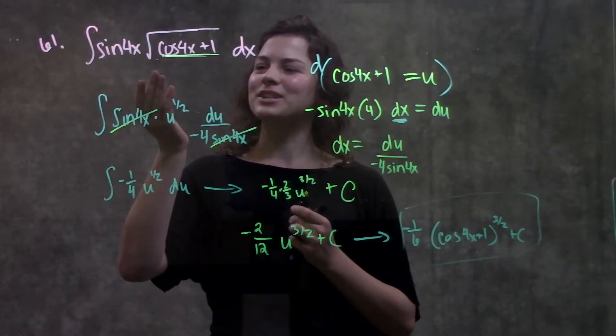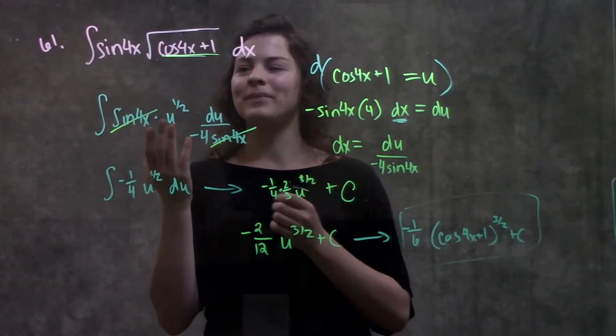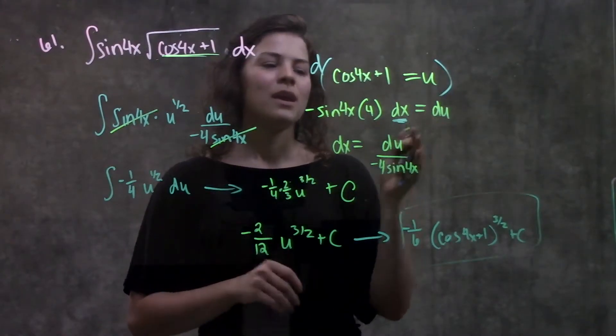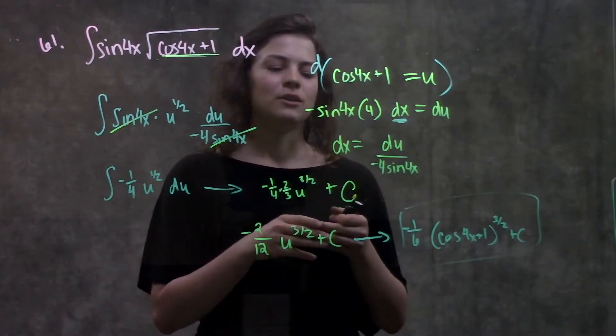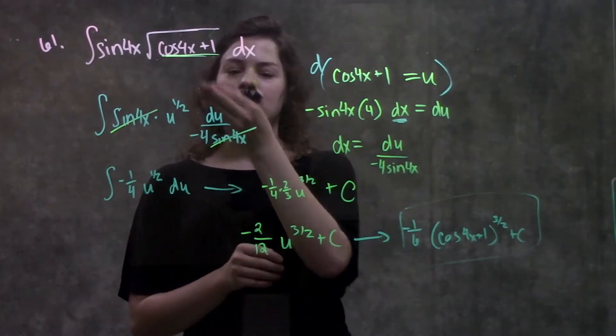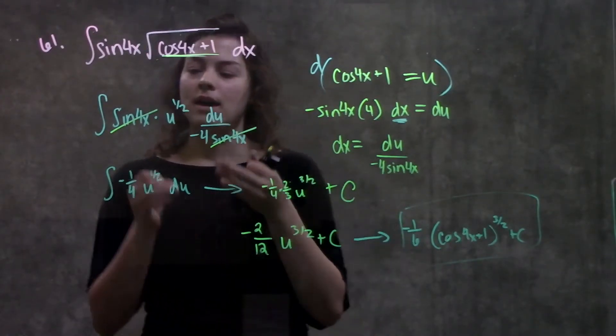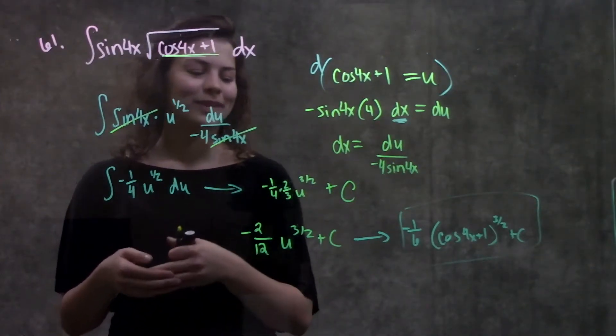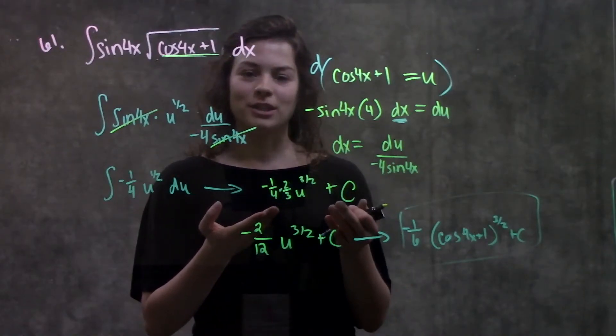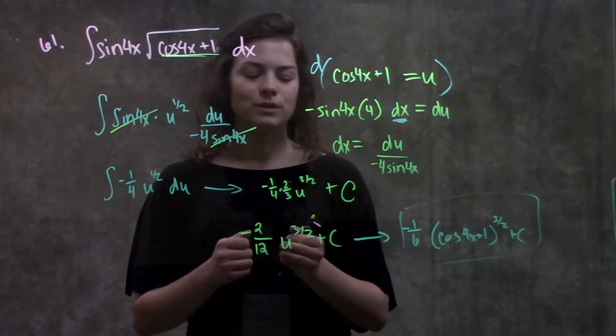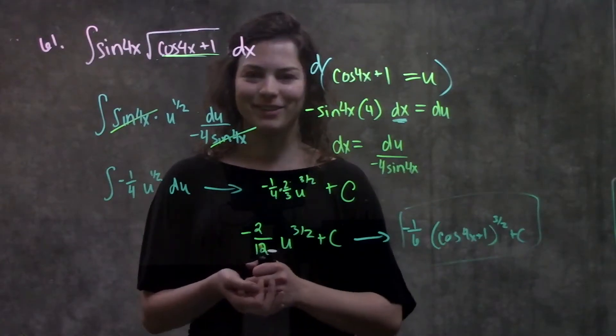So remember, I had this original function, didn't know how to take the integral of it. So I took a function within a function, set it equal to u, took the derivative of both sides so that I also had a value to plug in for my dx. Plugged in my u, plugged in my dx, things cancelled, and I was left with a function in terms of only u. Then I took the integral of that function using my normal rules, subbed back in whatever I set u equal to, and had my answer.